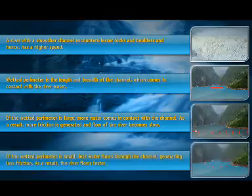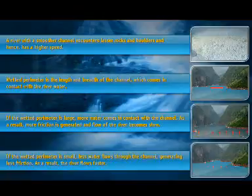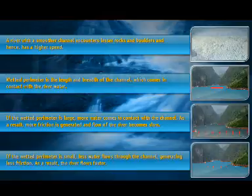If the wetted perimeter is small, less water flows through the channel, generating less friction. As a result, the river flows faster.